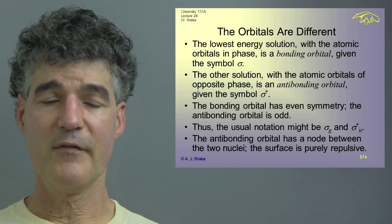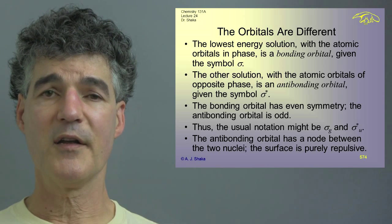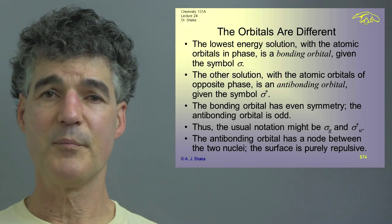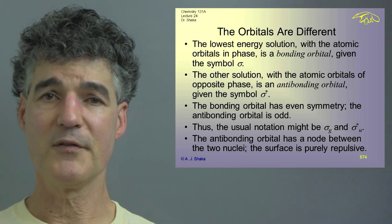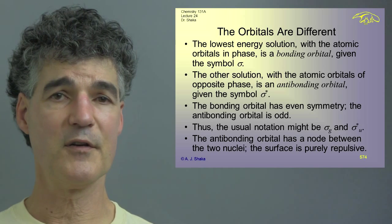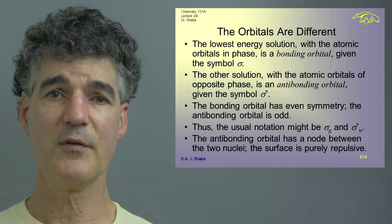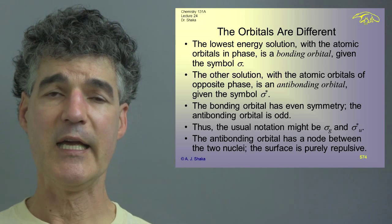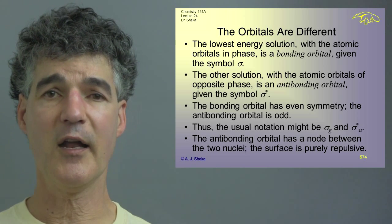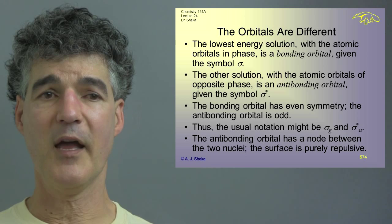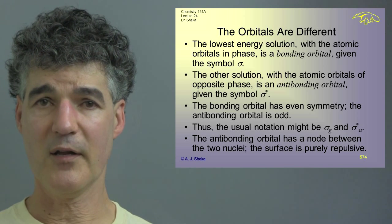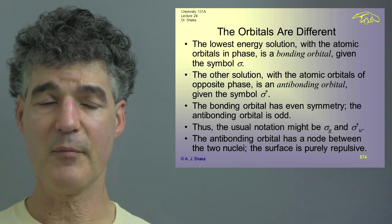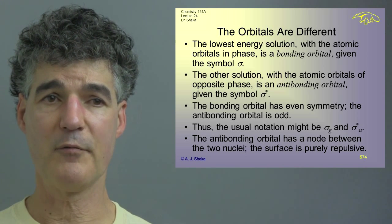If you put an electron in the anti-bonding orbital, it's unfavorable for the future of the molecule. The bonding orbital has even symmetry and the anti-bonding orbital has odd symmetry. The notation is sigma_g for even symmetry and sigma*_u for odd symmetry, and molecular orbitals are often labeled this way to help you understand what they look like. The surface of the anti-bonding orbital is purely repulsive with a node between the two nuclei, so you can never get the molecule to be stable with that root.